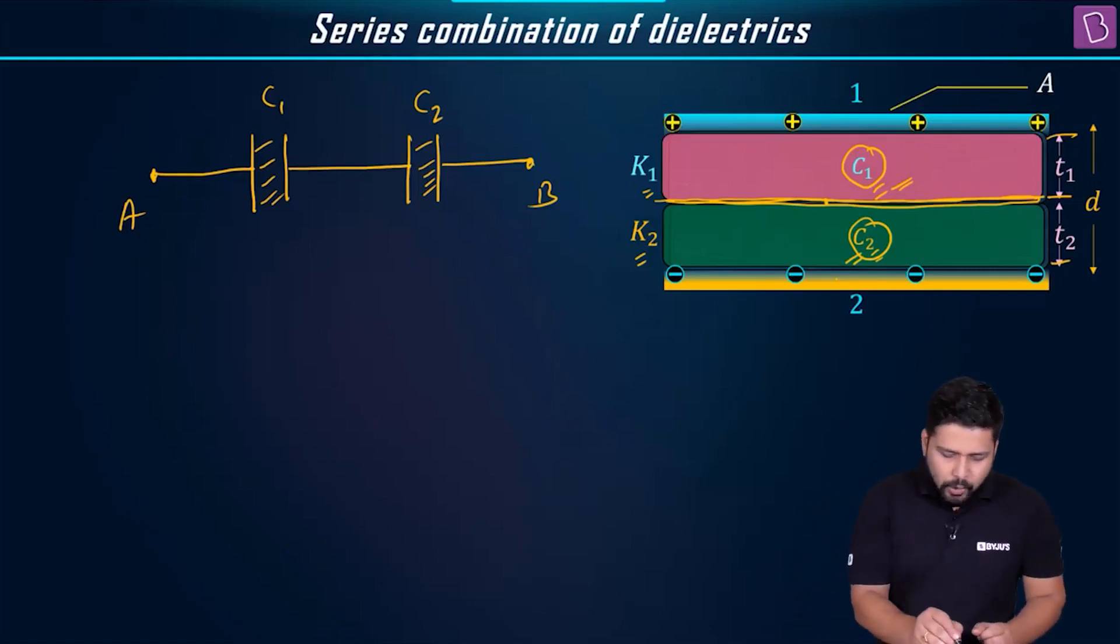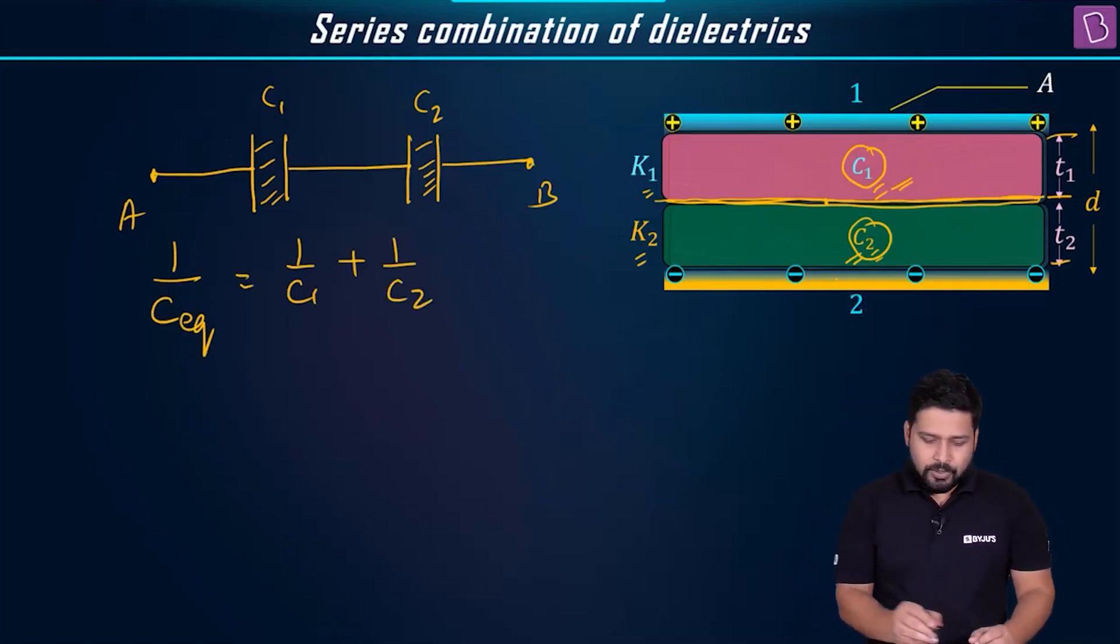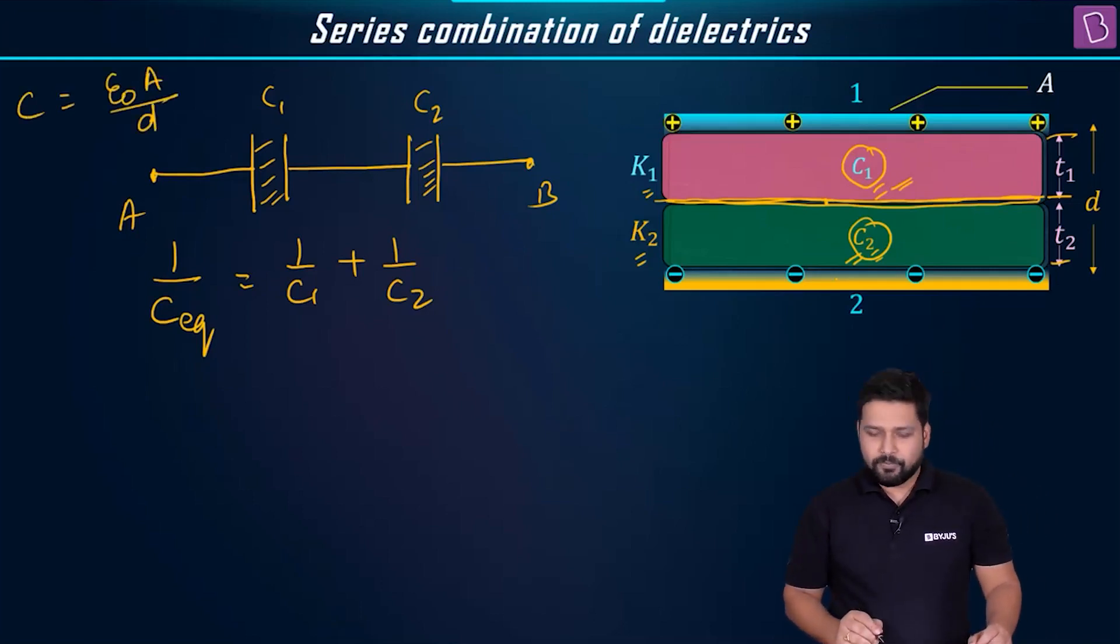If I have to write the formula of c equivalent, for series I know 1 by c equivalent is equal to 1 by c1 plus 1 by c2. What are the values of c1 and c2? The formula of c is c equals epsilon naught a by d, we all know this.